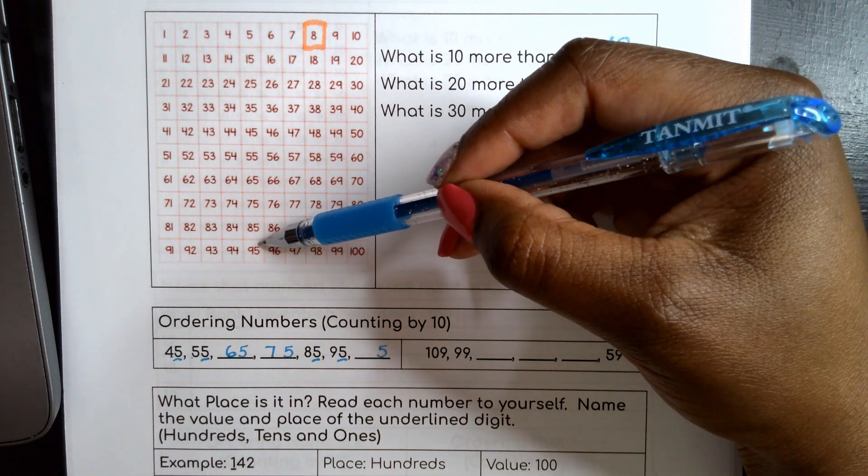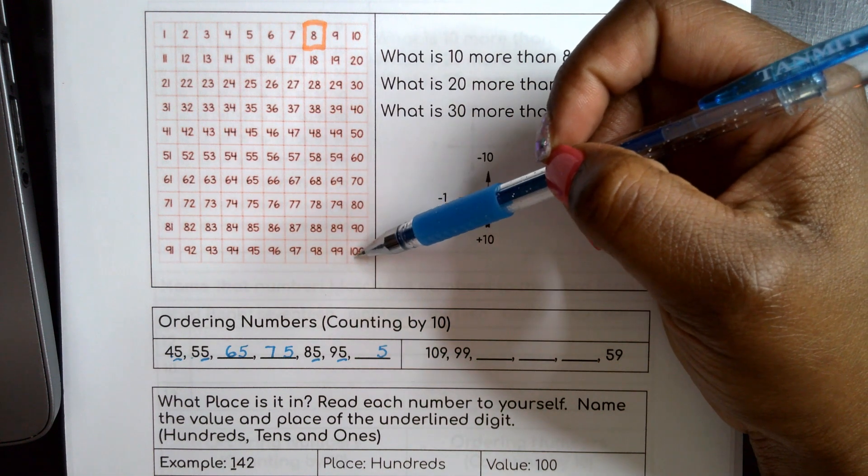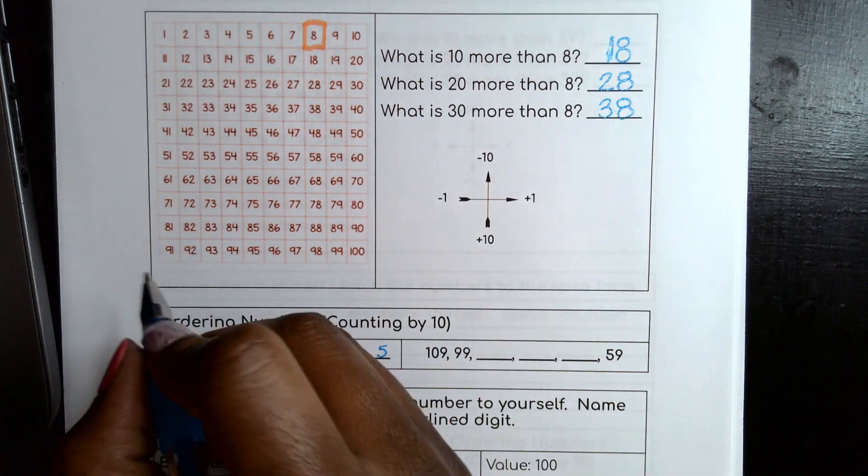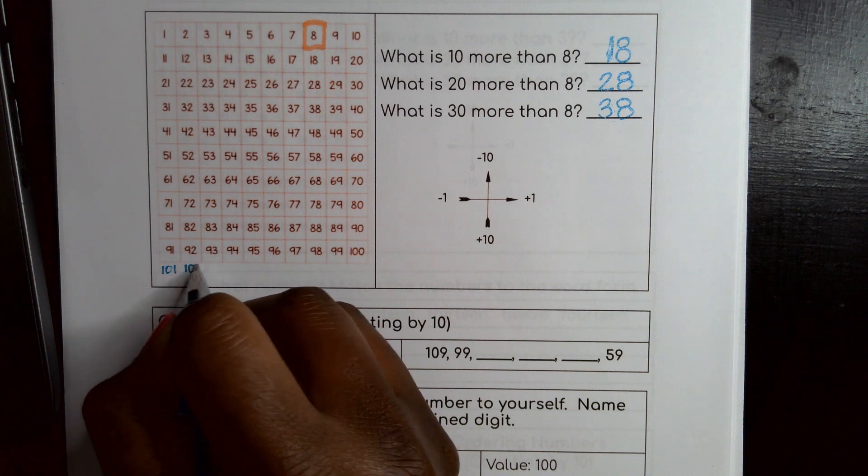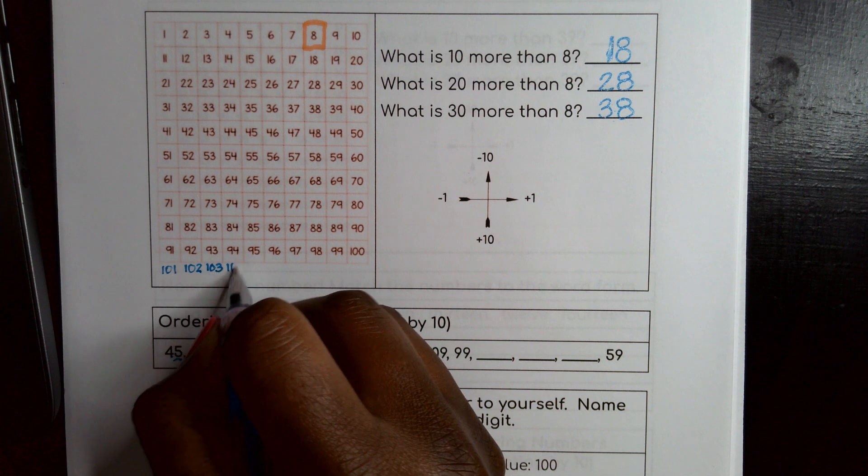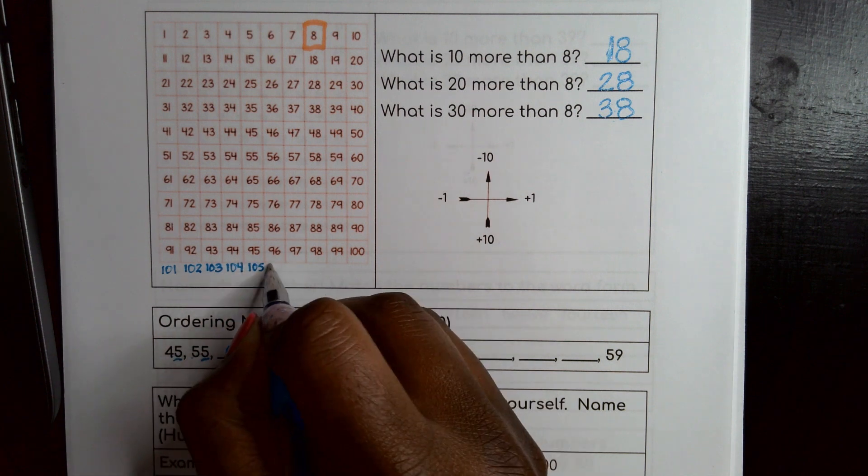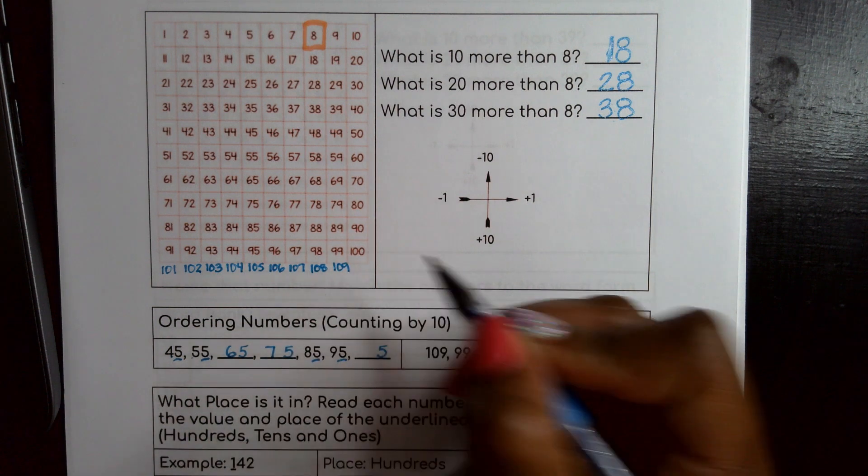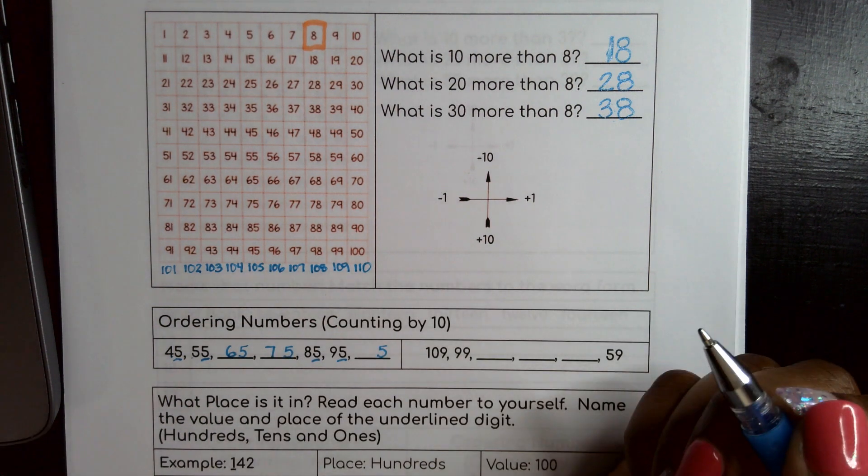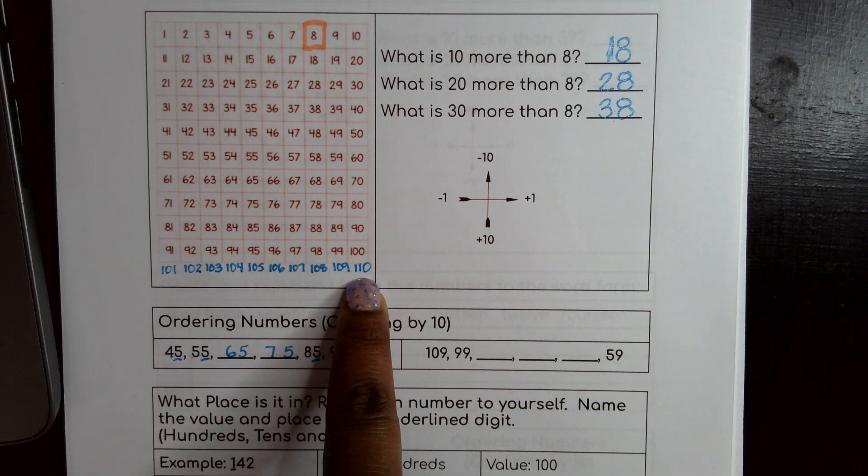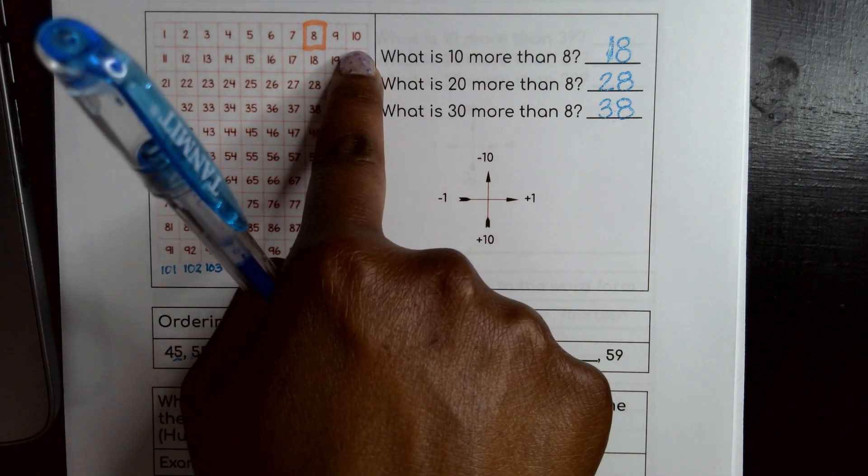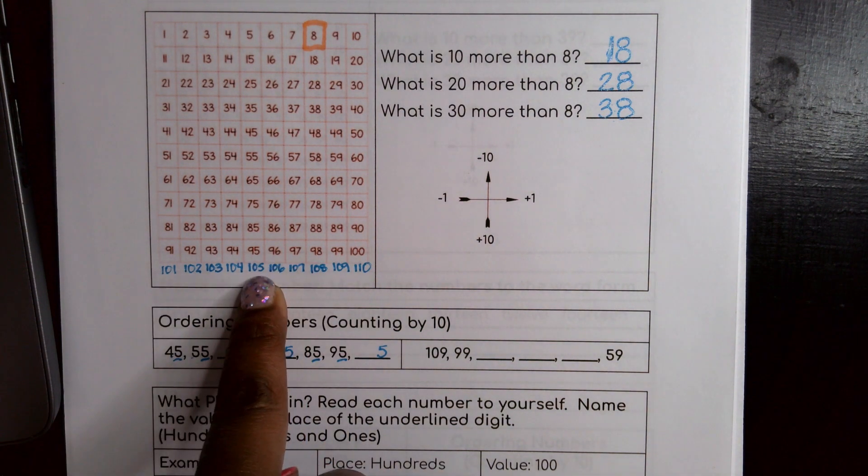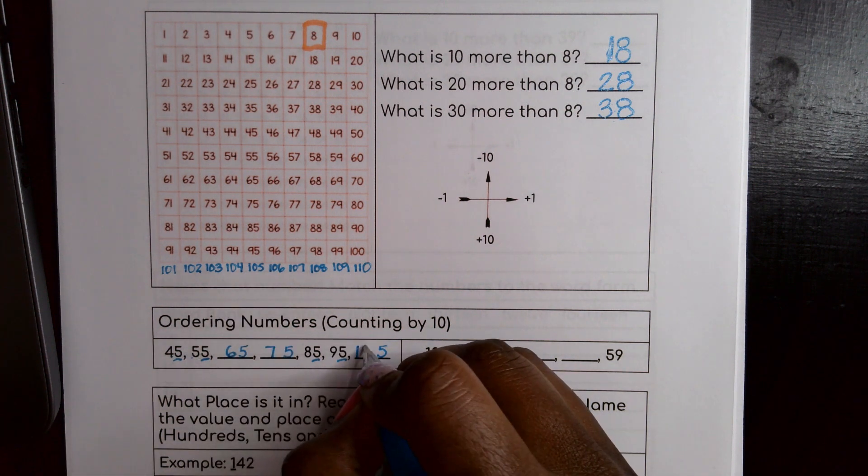But my hundred chart ends right here. So mentally I have to think, what would come after this 100 if I kept going? Well, I think this would be 101, 102, 103, 104, 105, 106, 107, 108, 109, and 110. Interesting because that first line follows the same pattern as the top line except there's a 100 in the beginning. So I think here after 95 the next number in my pattern would be 105. Wow. Geniuses.